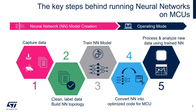There are five key steps behind running neural networks on MCUs. First, capture data. Then, clean and label the collected data and build the network topology. Then, train the neural network with the data and convert the trained model into optimized code that runs on MCUs. And finally, run the neural network on your device.